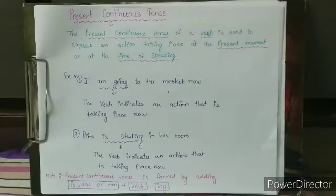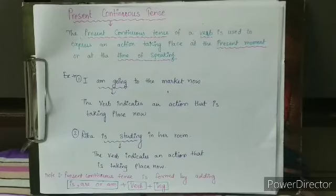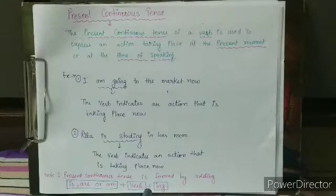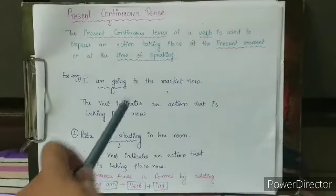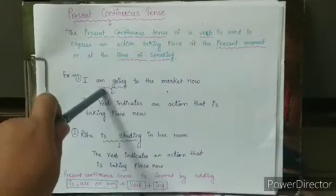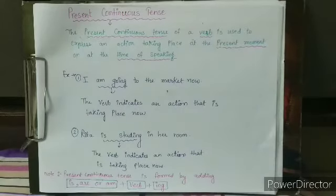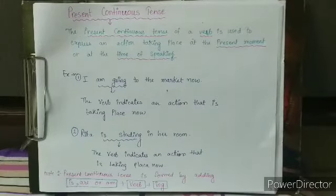The present continuous tense is formed by adding is, are, or am — the be form — plus the verb with the ing form. So the formation is: is/are/am + verb with ing form.